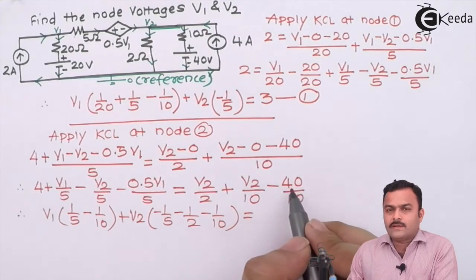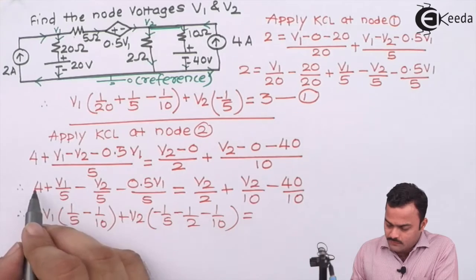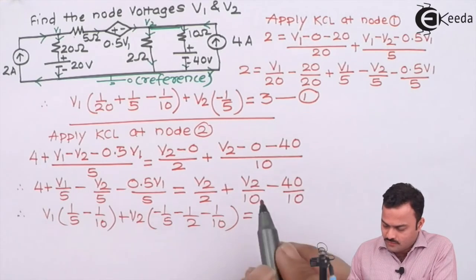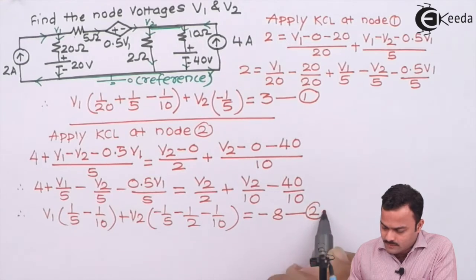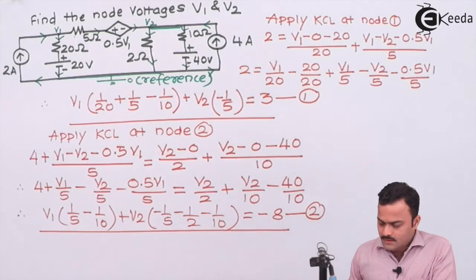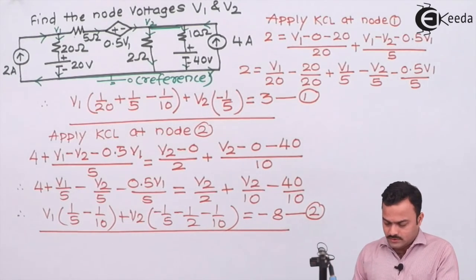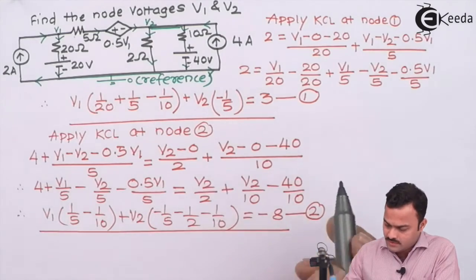Here minus 40 by 10 is minus 4. This 4 will go that side, so minus 4 minus 4 will become minus 8 as equation number 2. You have two nodes, so two equations are required. We have got two equations.